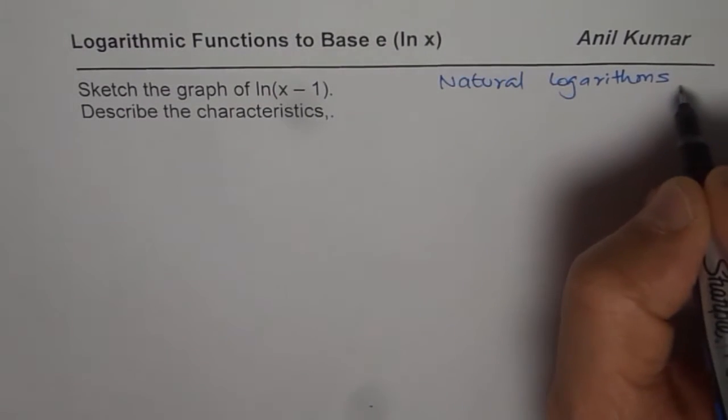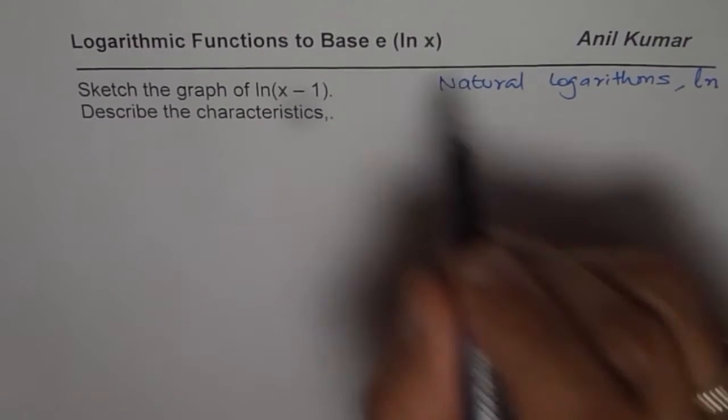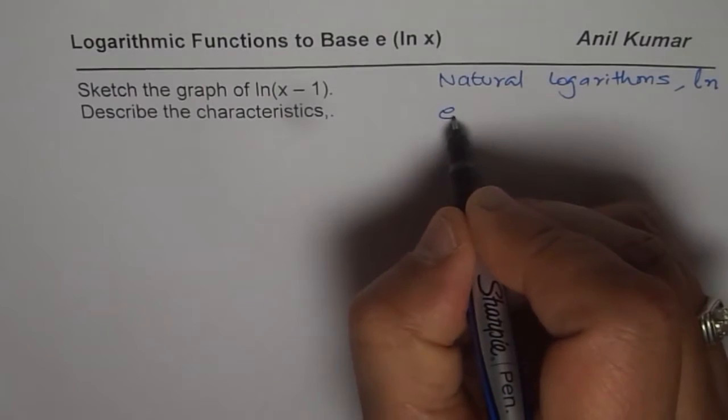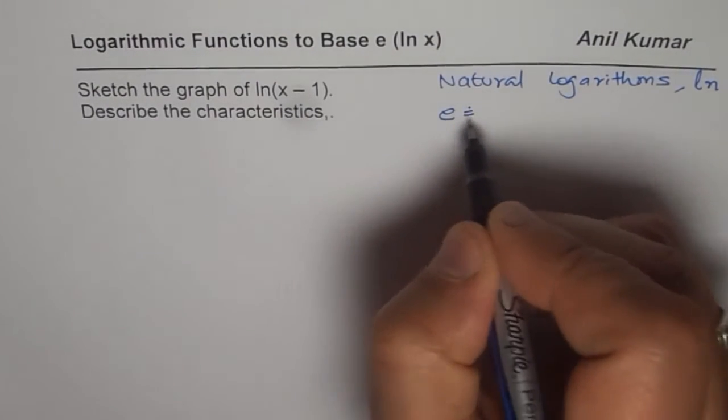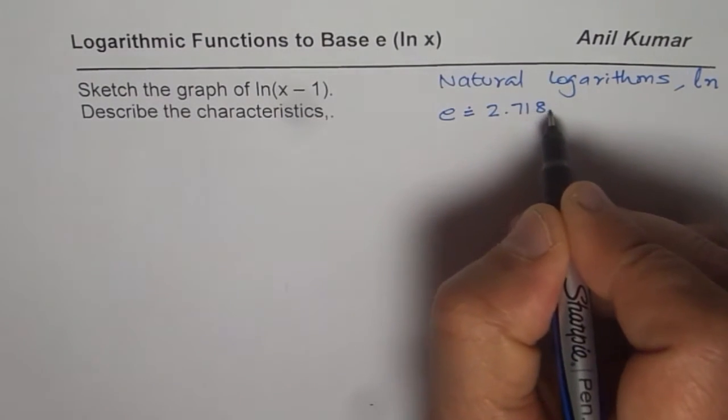On the keyboard you'll find ln as the key on the calculator. These are to the base e, where e is an irrational number which is approximately equals to 2.718 and so on.